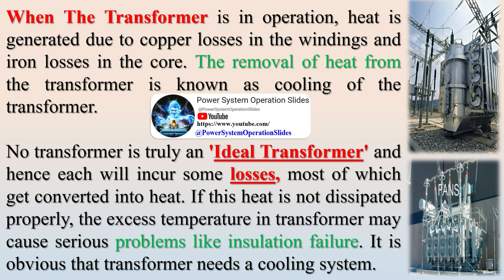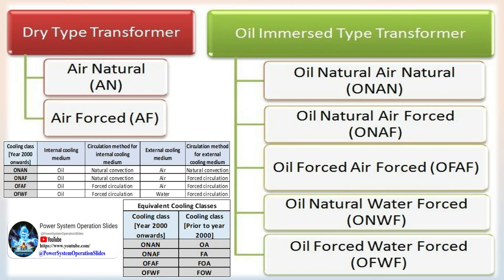Transformers are classified into two groups according to the method of cooling: dry type and oil immersed. When the transformer is in operation, heat is generated due to copper losses in the windings and iron losses in the core. The removal of heat from the transformer is known as cooling. No transformer is truly ideal and hence each will incur some losses, most of which get converted into heat. If this heat is not dissipated properly, the excess temperature may cause serious problems like insulation failure. It is obvious that a transformer needs a cooling system.